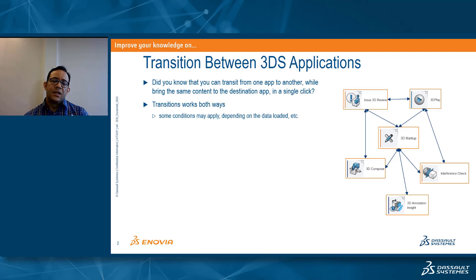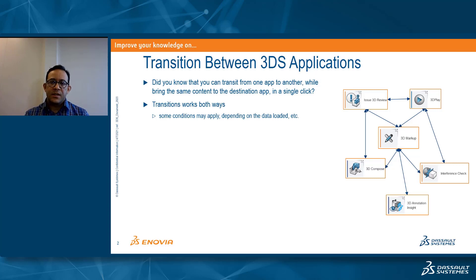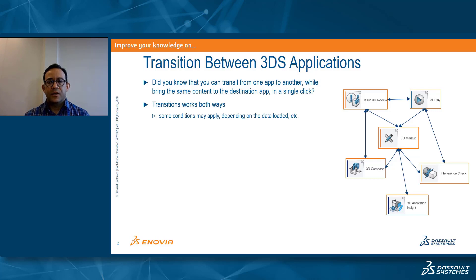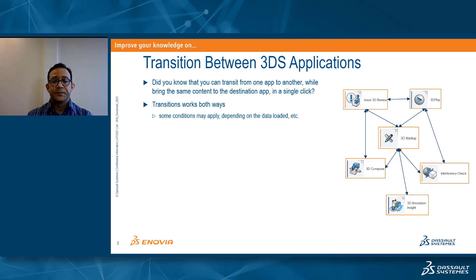Sometimes we have it in one way, but usually it is a two-way transition — from one app I can transit the content to another app and back to the original app, and that depends on the type of data that has been loaded in the original app.